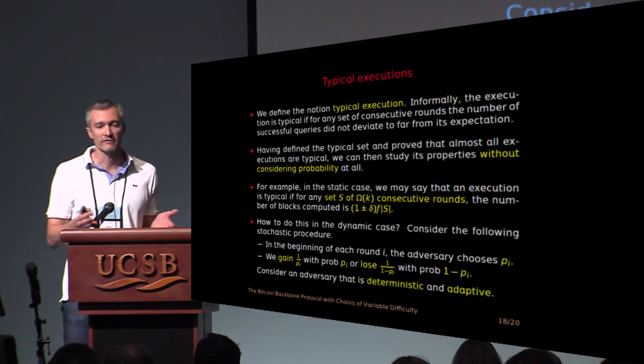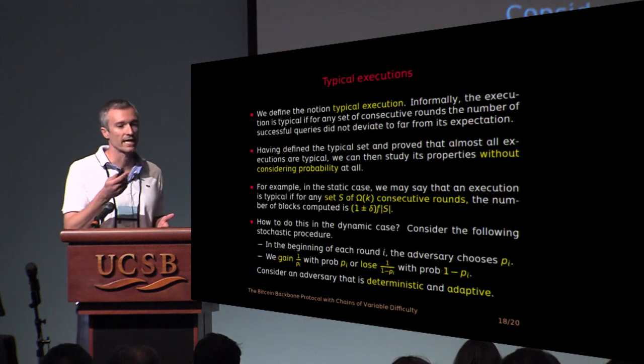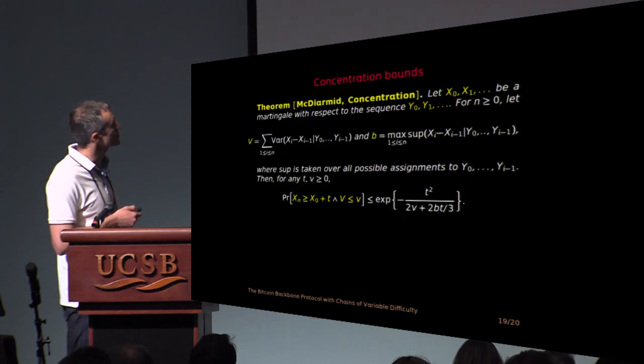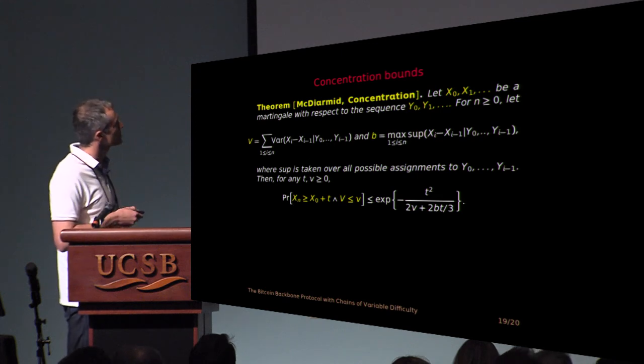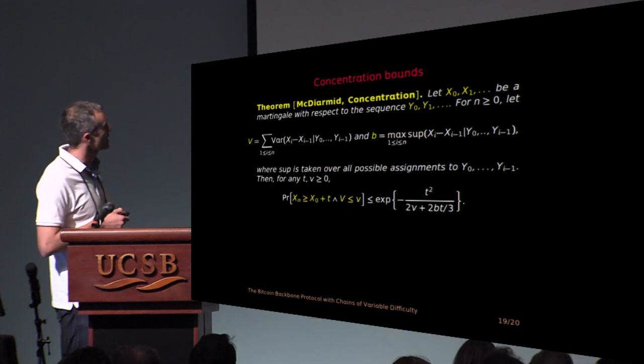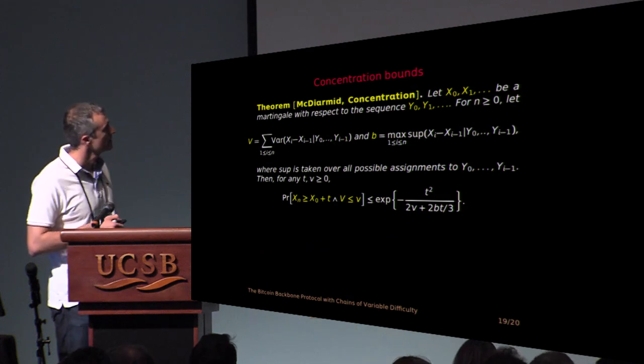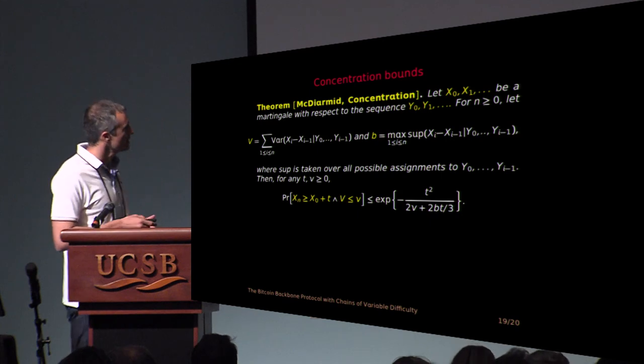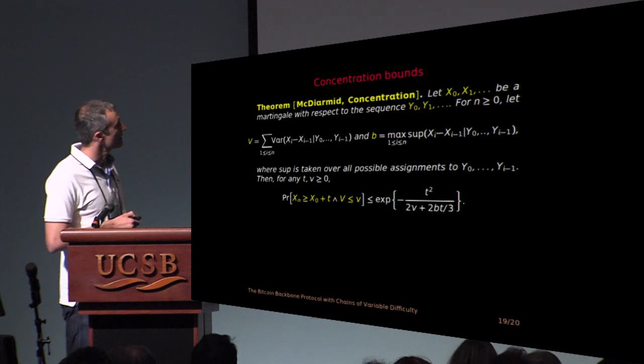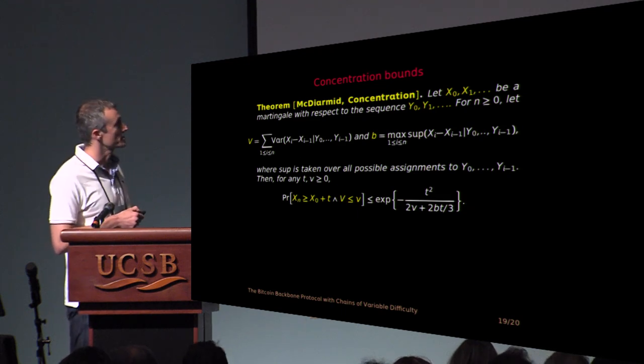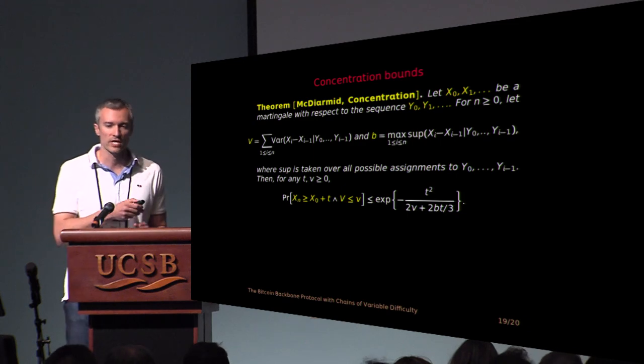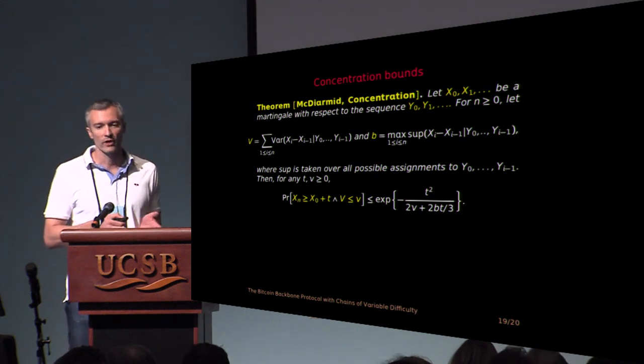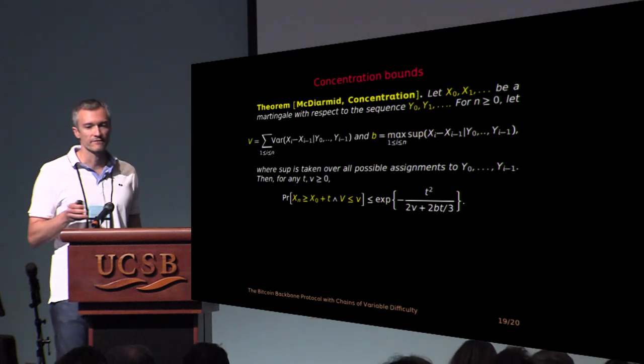So the problem is that how large a set of rounds should you look into? The probabilities could be very small and maybe you should look at a larger set of rounds. And the solution gives the following result which you can find in a survey by McDiarmid called concentration. We shouldn't parse all of this right now, but let's look at the final statement. What this says is that if you have a martingale like in the stochastic process before, the game we just saw, then what you can say is that the event that you don't have concentration and you have small variance, small sum of conditional variances, is very small. In other words, either you have large variance or you have concentration.